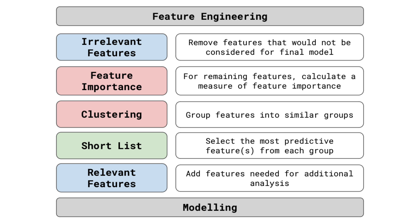In the end, all the above considerations need to be formalized in some way. This is where a feature selection framework comes in. It will outline the technical details of your approach to selecting features, including the measure of feature importance, the variable clustering method, and how many features to select from each group. It can also define your approach to handling the other considerations, such as what analysis is required to determine if a feature will be stable.